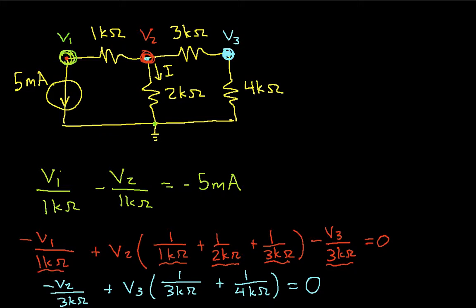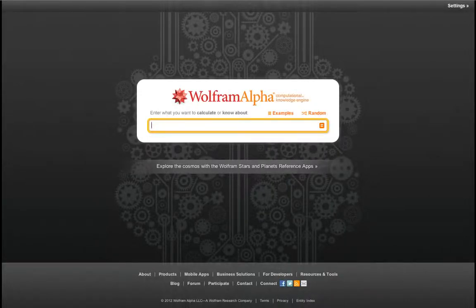So there we have it. We actually have 3 equations and 3 unknowns. All we need to do now is solve the 3 equations and 3 unknowns for V1, V2, and V3, and we're done. So let's go to Wolfram Alpha, which is my current tool of choice for doing this.